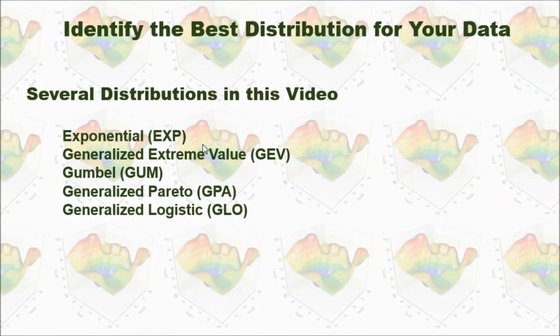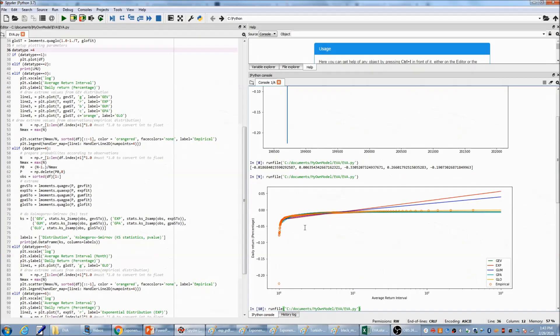Again, this is the five distributions I used in this video. From this graph, we can visually check which distribution fits our data best. This generalized logistic distribution fits our data very well.